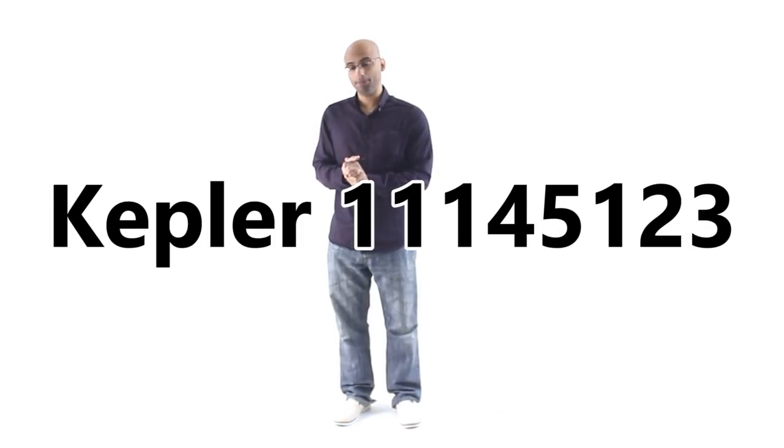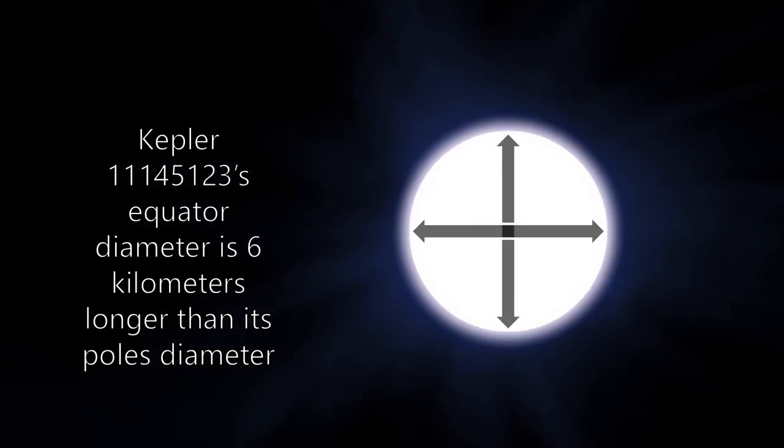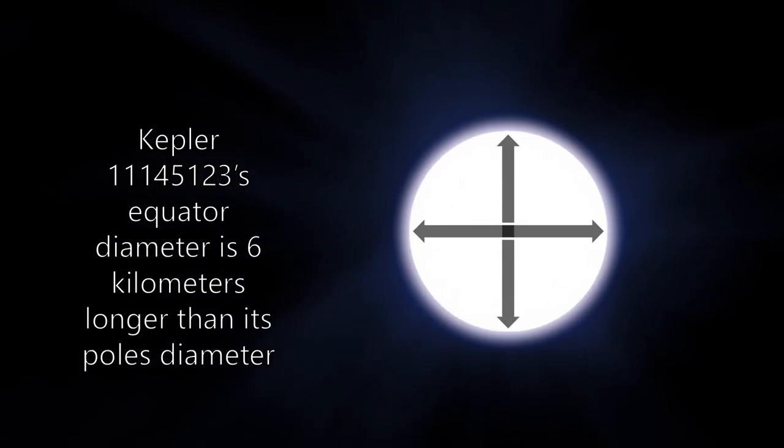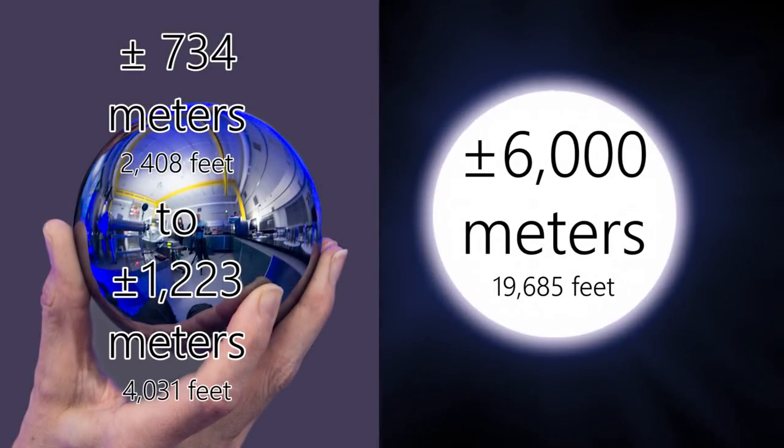The roundest typical star ever discovered is Kepler-11145123. Kepler-111... Hello? I didn't dial a phone number. That's the name of a star. Yeah, yeah. By the way, how are you talking to me? My hand is not a phone. Really? Okay then. Thank you for your call. Goodbye. Kepler-11145123 is a star that has around 1.5 times the mass of our own sun and around 2.25 times the diameter of our own sun. However, it spins three times slower. This gives it an equatorial bulge of six kilometers, which unfortunately is still not enough to beat the silicon spheres that have been made here on Earth.